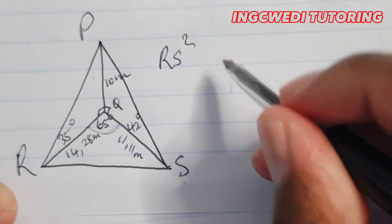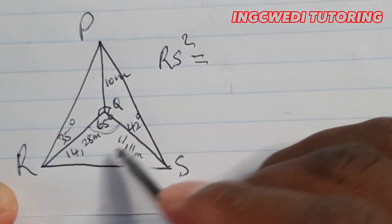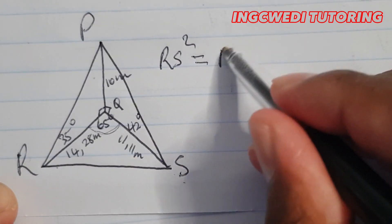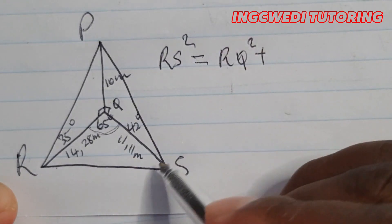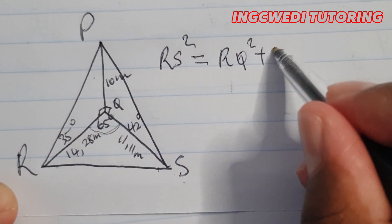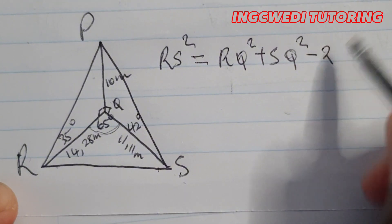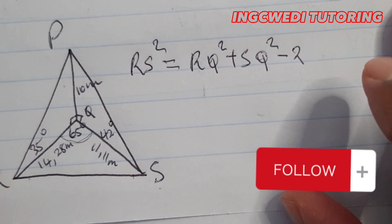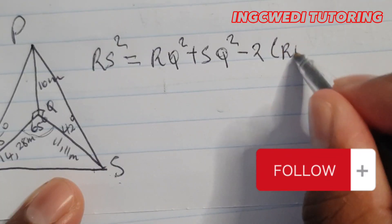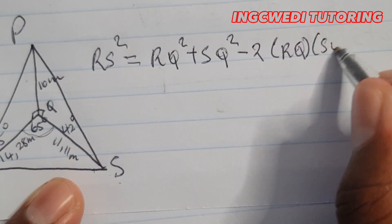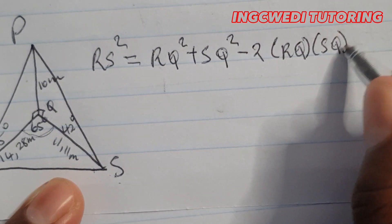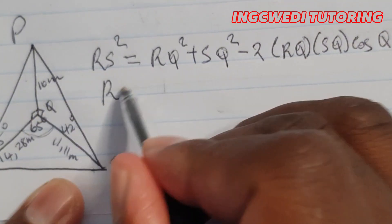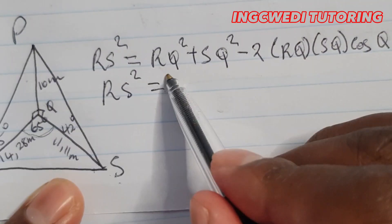RS squared will be equal to RQ squared, plus SQ squared, minus two of these sides — RQ times SQ — cos of angle Q.